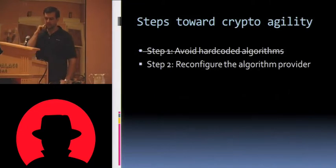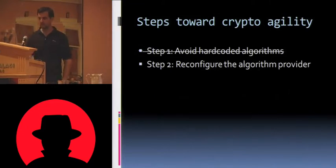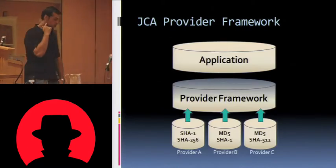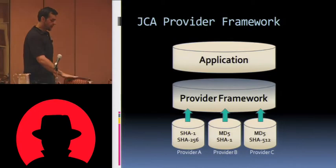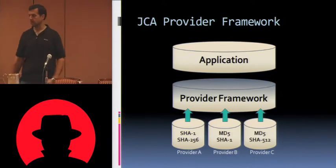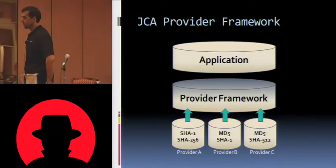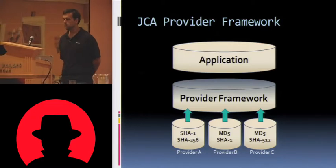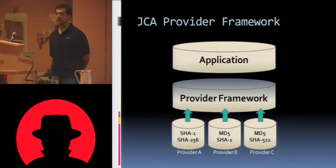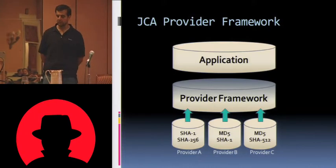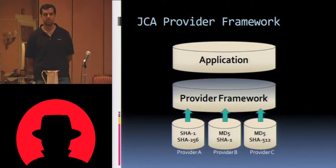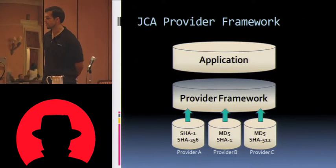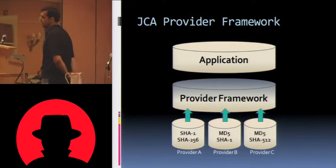The second step towards crypto agility is to reconfigure the algorithm provider. In order to write our own providers, we really need to understand how the provider framework works. We'll start with JCA. The application does not communicate directly to the providers themselves — the providers just register themselves to the provider framework, and then the application talks to that.